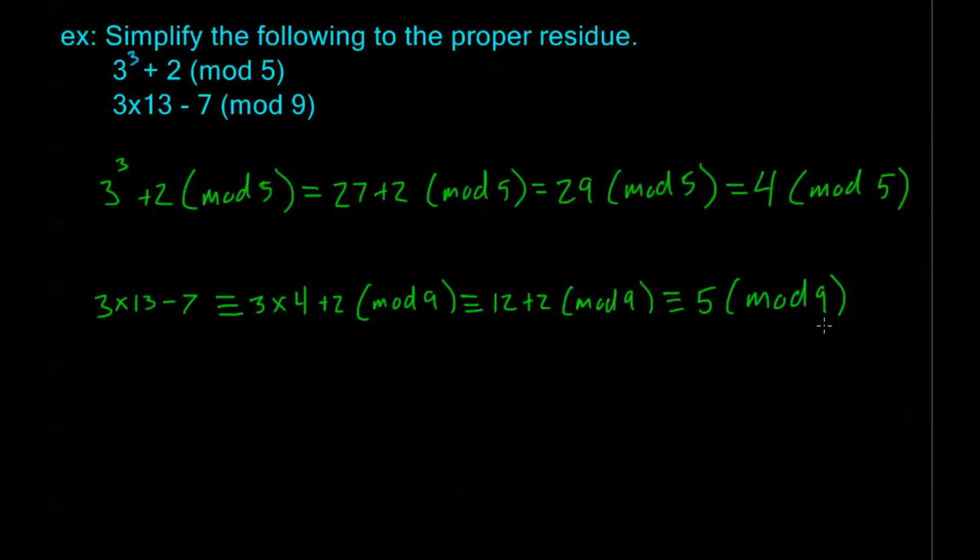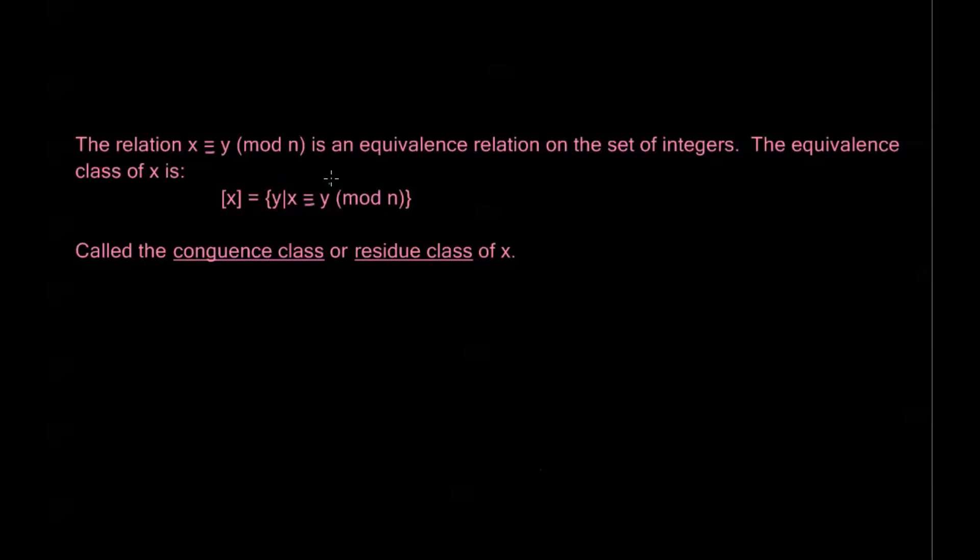Now one last thing I want to talk about, and I already kind of mentioned it. When we talked about relations before, we talked about equivalence relations, equivalence classes, and I already talked about this in that video, but just a reminder, the relation x congruent to y mod n is an equivalence relation on the set of integers. The equivalence class of x, we denote it in this way, this is going to be all y such that x is congruent to y mod n. And this is called the congruence class or residue class of x. In other words, I'm just saying that I can think of any number x as being equivalent in a modular arithmetic to any other number that it's congruent to in that modular arithmetic. And I can substitute it for any of those numbers at any time. It makes it really convenient to solve certain types of problems. And it's kind of a neat idea.